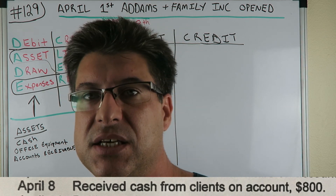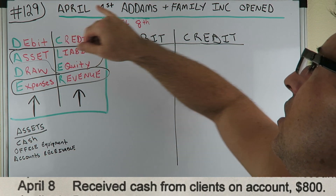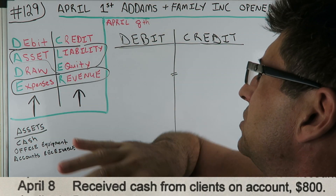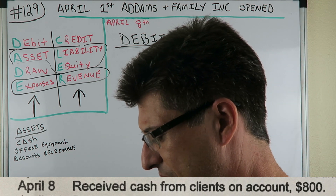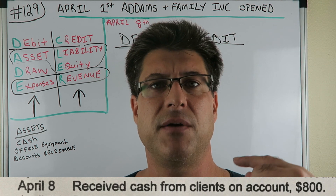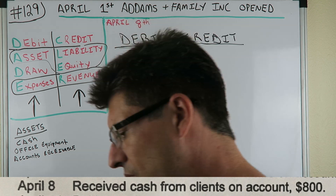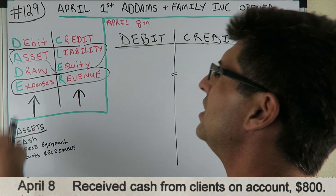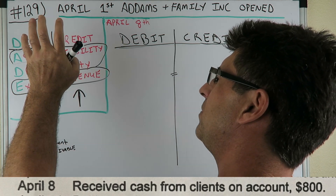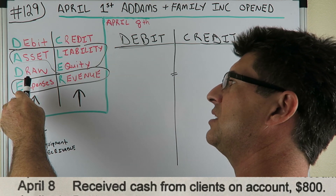We're making a subsection called Journal Entries Made Easy. We're going over the Addams Family example — it opened April 1st. This is our fifth or sixth journal entry, shown at the bottom here. We always have to go over DCA lure: this is how we make journal entries.